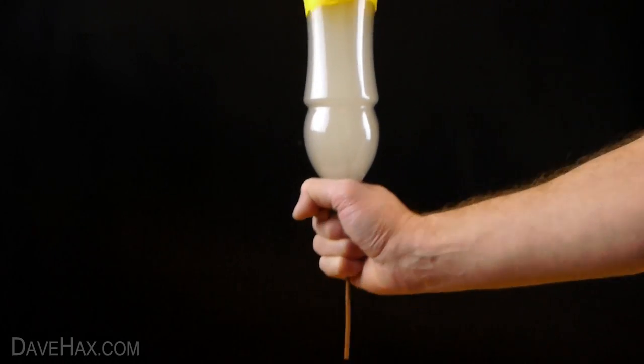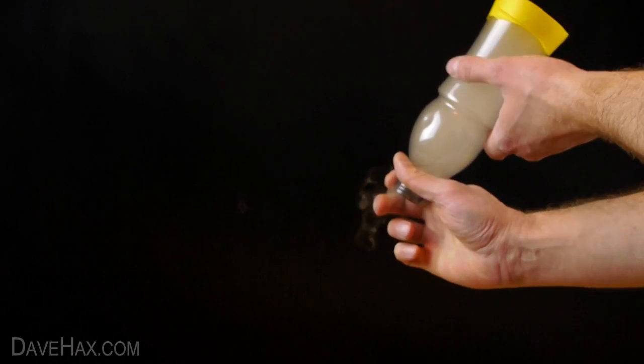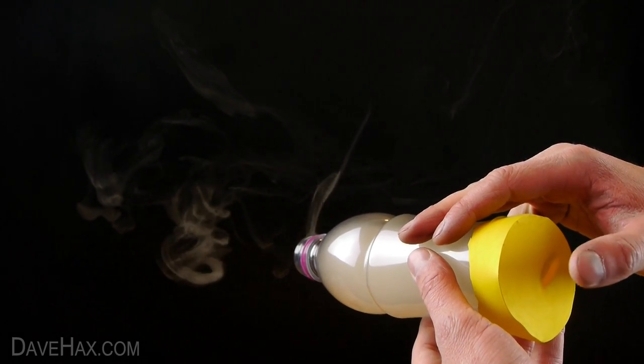When it's full remove your incense stick and it's ready to use. Just tap the balloon with your thumb and you'll start making smoke rings.